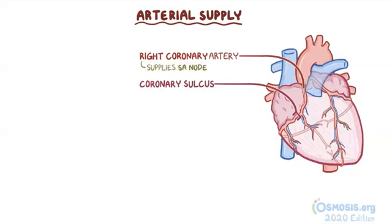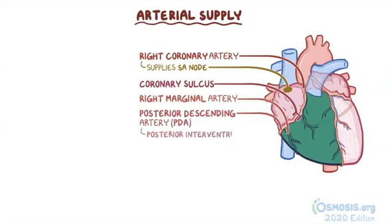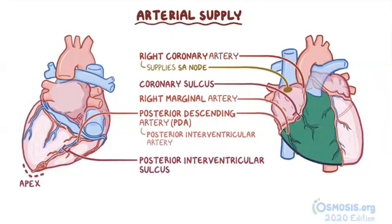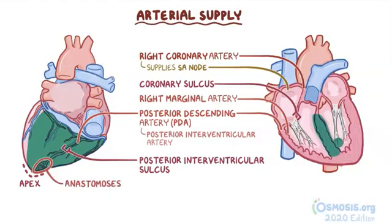Along the way, the right coronary artery supplies the SA node. It later divides into two branches: the first is the right marginal artery, which stretches along the margins of the bottom right side of the heart supplying the right ventricle. The second branch is the posterior descending artery, or PDA — sometimes called the posterior interventricular artery — which goes down the posterior interventricular sulcus towards the heart's apex, supplying the posterior one-third of the interventricular septum, the posterior two-thirds of the ventricular walls, and the posteromedial papillary muscle. At the apex, the PDA merges with the LAD through interconnected arterial branches called anastomoses, and together they supply the right atrium and nearly all of the right ventricle.